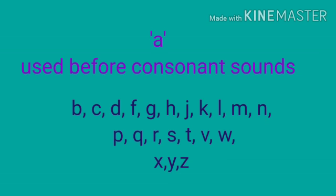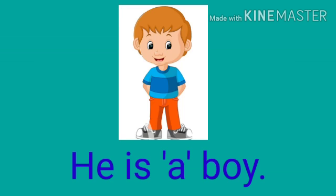The article 'a' is used before consonant sounds in the alphabet. We have 26 letters in our English alphabet. There are 21 consonant sounds. They are B, C, D, F, G, H, J, K, L, M, N, P, Q, R, S, T, V, W, X, Y, Z.